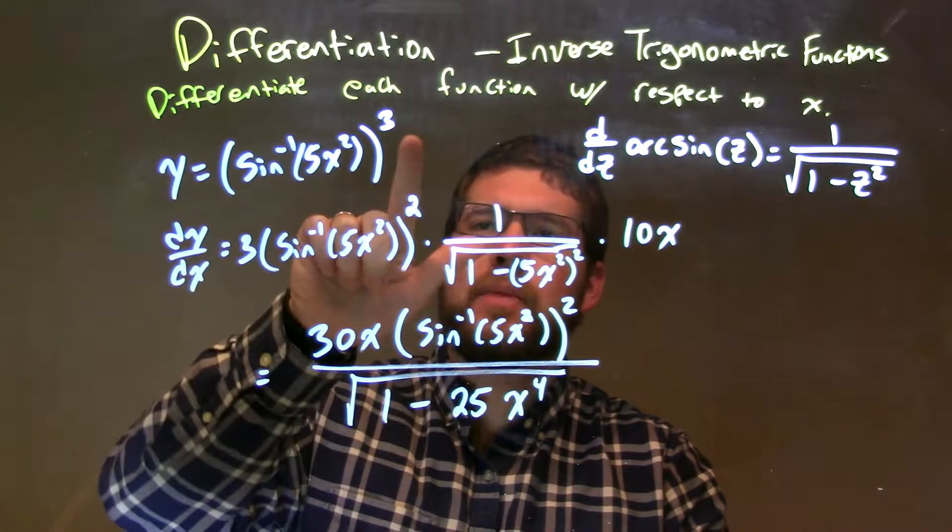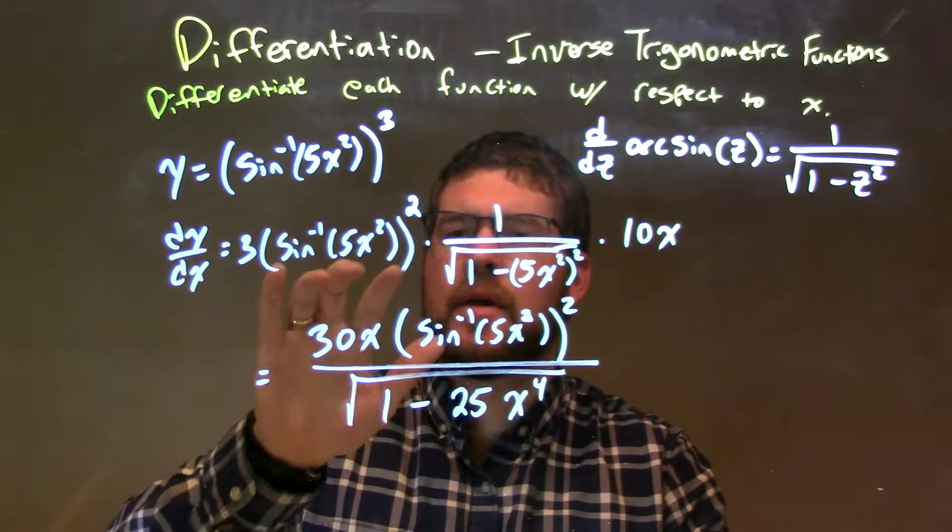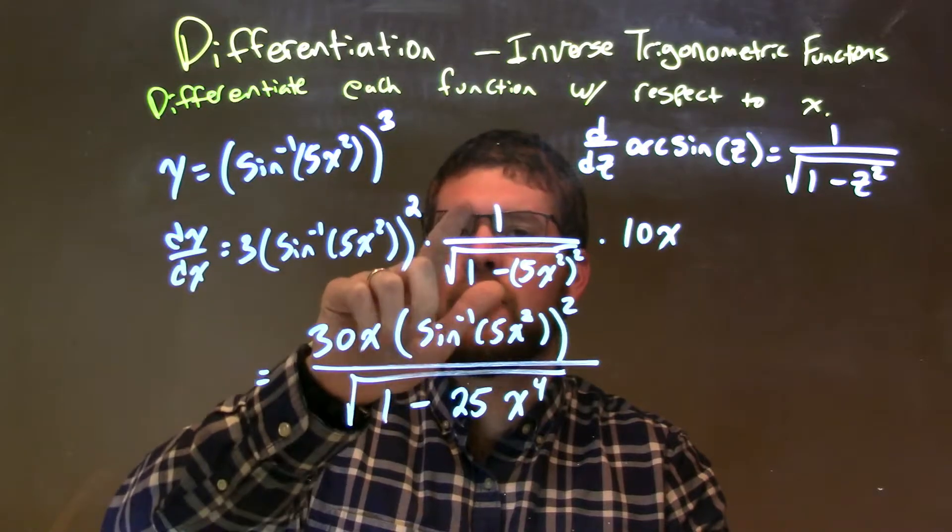So chain rule, power rule, power chain rule, right? 3 comes down, keep the inside the same. Then we take the derivative of the inside, that's a chain rule part.